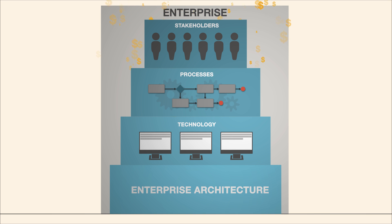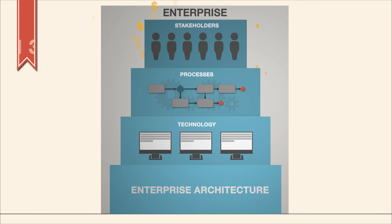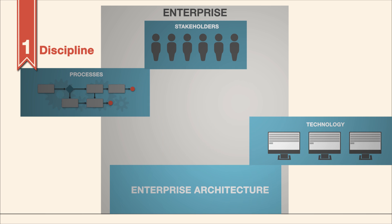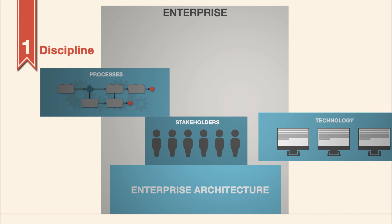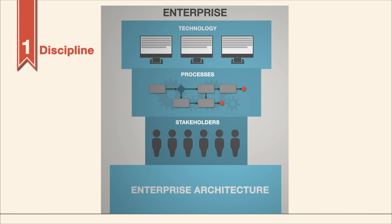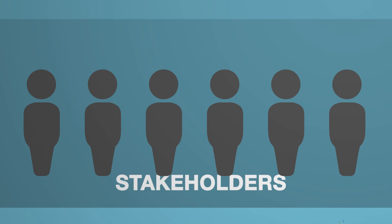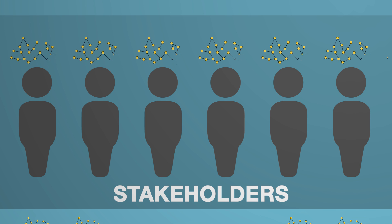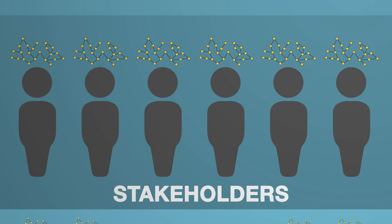Enterprise architecture is really three things. Firstly, it's a discipline. As a discipline, it's a way of thinking about the structure of an enterprise. An enterprise architect is a professional with know-how, skills and aptitude in this discipline.